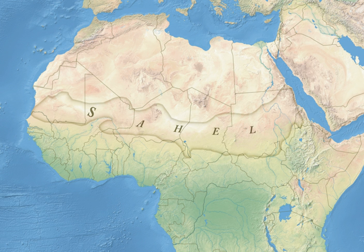Around 4000 BC, the climate of the Sahara and the Sahel started to become drier at an exceedingly fast pace. This climate change caused lakes and rivers to shrink rather significantly and caused increasing desertification. This, in turn, decreased the amount of land conducive to settlements and caused migrations of farming communities to the more humid climate of West Africa.